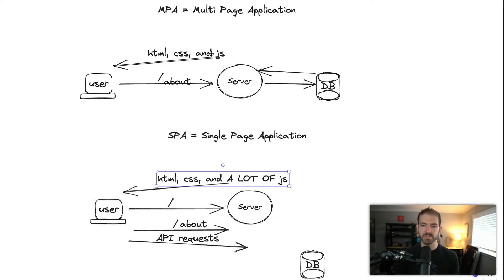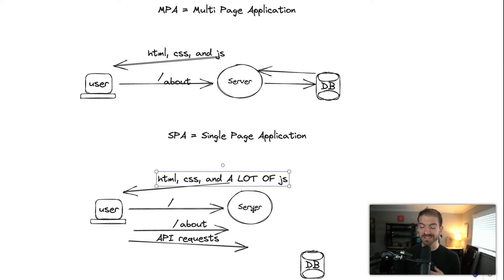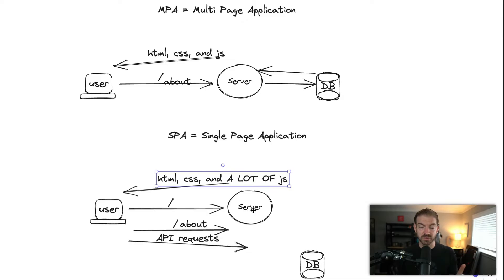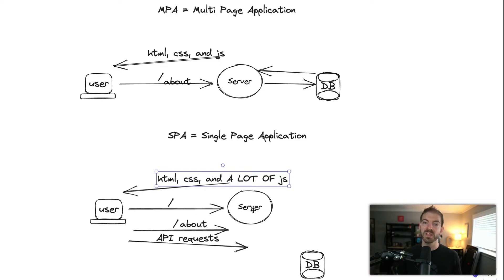The original page load for any given MPA page is probably going to be faster because you're not loading that extra JavaScript — you're just getting what you need for that page. The downside is when you switch pages, you have to make another full request to the server. In an SPA, you're just loading API data and the rest of the application skeleton is already in that JavaScript bundle. So SPAs take longer on the first request, then less time on subsequent requests; MPAs are the opposite.